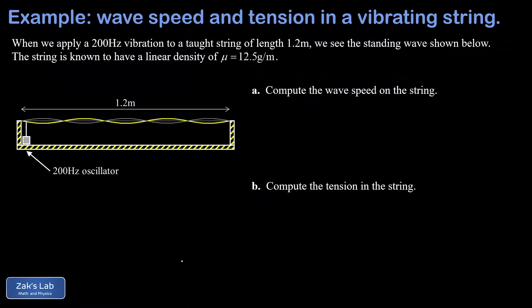In this video we're looking at a normal mode on a vibrating string. I can see that I have one, two, three, four, five anti-nodes here, so this is the n equals five normal mode. We're told the frequency of oscillation for this normal mode is 200 hertz, we know the total length of the string is 1.2 meters, and we're given the linear density of the string, 12.5 grams per meter. In part A we're going to find the wave speed on the string, and then in part B we'll find the tension.